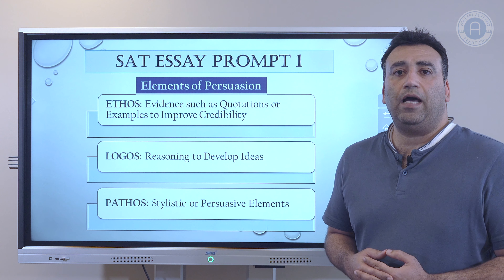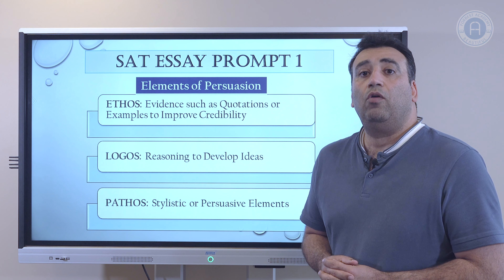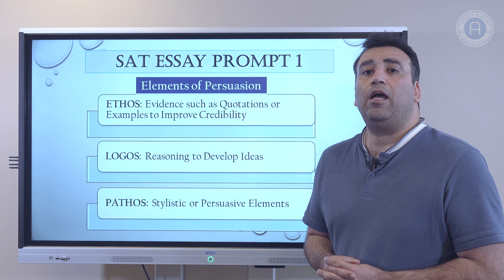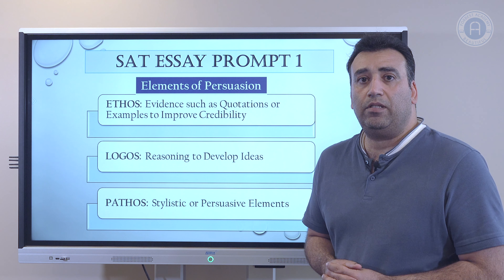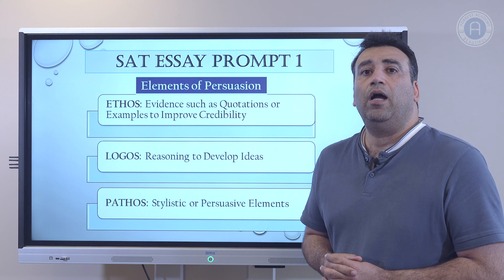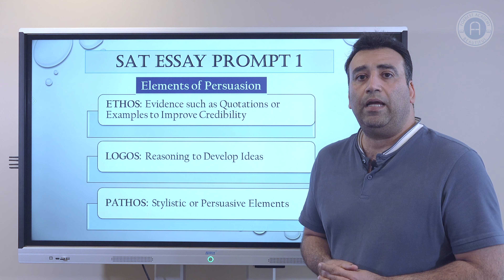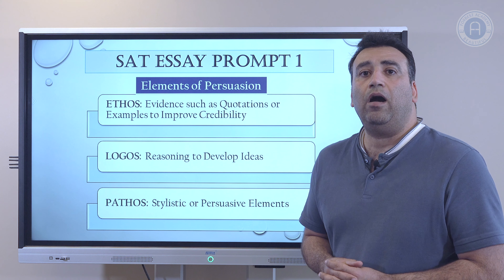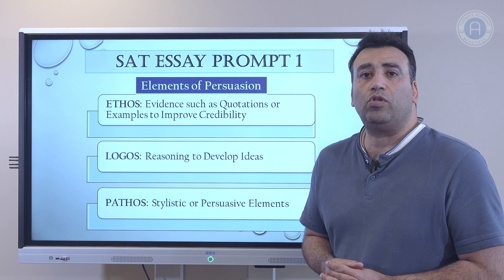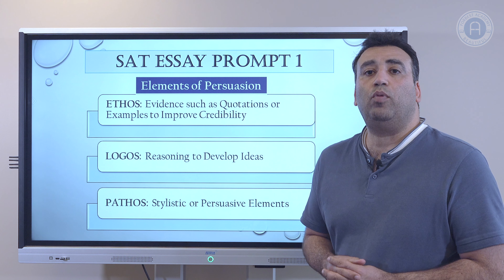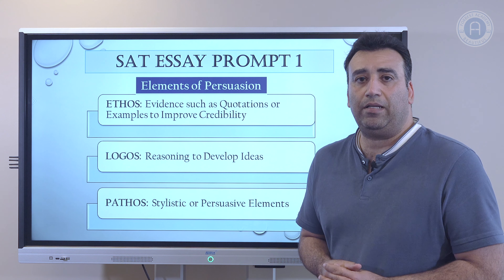The third element is pathos, which comes from emotion. It refers to the author's choice of words and stylistic elements such as simile, metaphor, allusion, hyperbole, and personification in order to play on the reader's emotions or pique the reader's attention to bolster the idea of the passage.